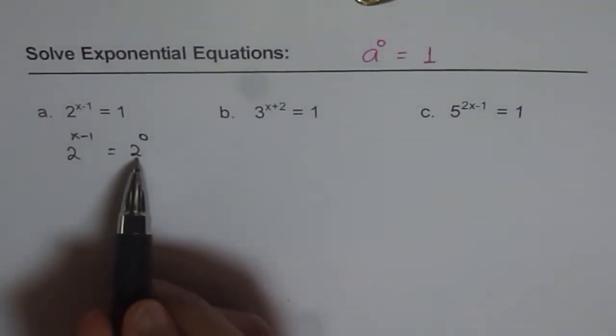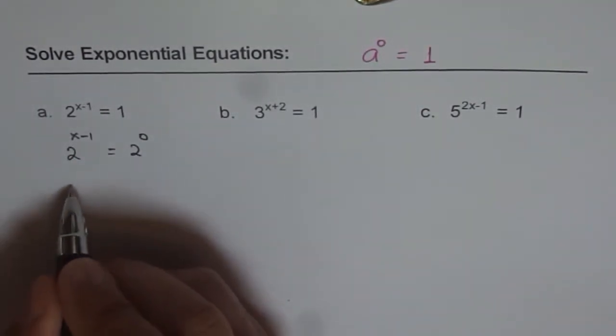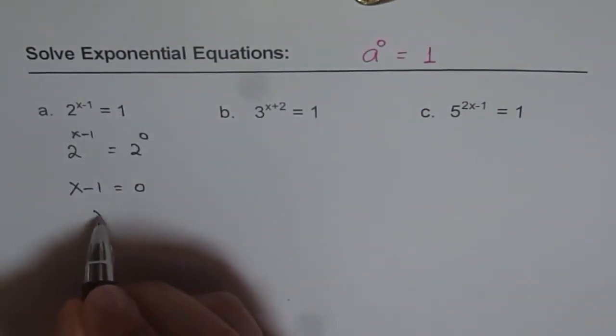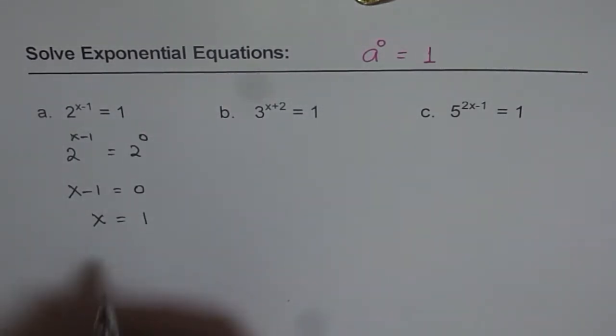Now when we have the same base, we can compare the exponents. So we have x minus 1 equals to 0. And this can be solved as x equals to 1 by adding 1 on both sides. So that is our solution.